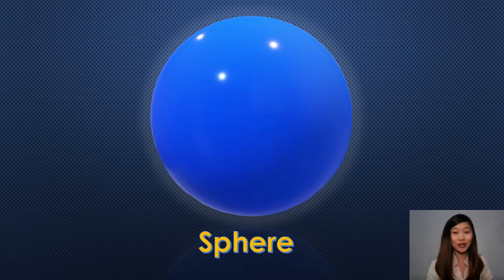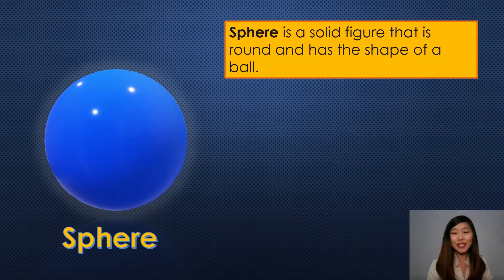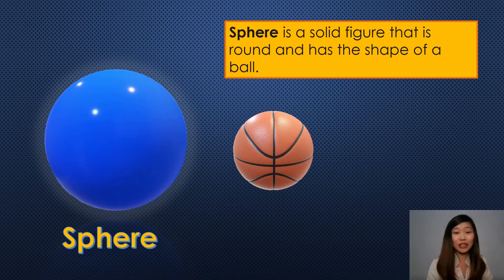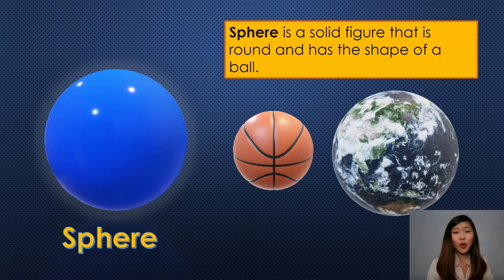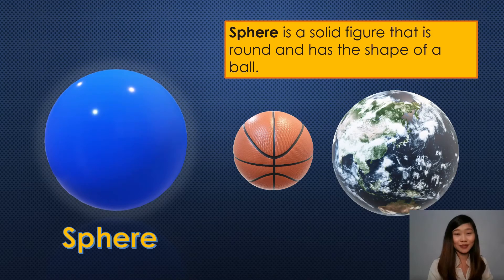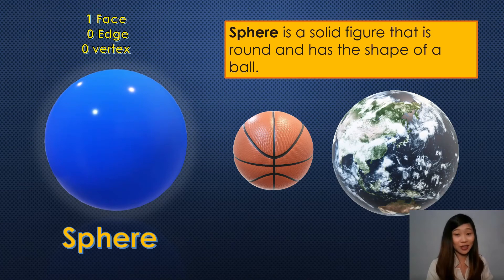Can you guess what figure this is? This is a sphere. A sphere is a solid figure that is round and has the shape of a ball. For example, a basketball is a sphere. Another example is the earth we are standing on — when we look at the globe, we see that the earth is three-dimensional and has the shape of a ball, therefore the earth is a sphere. It has one face, zero edges, and zero vertices. Can you name objects that are spheres? Fantastic! Those are examples of a sphere.